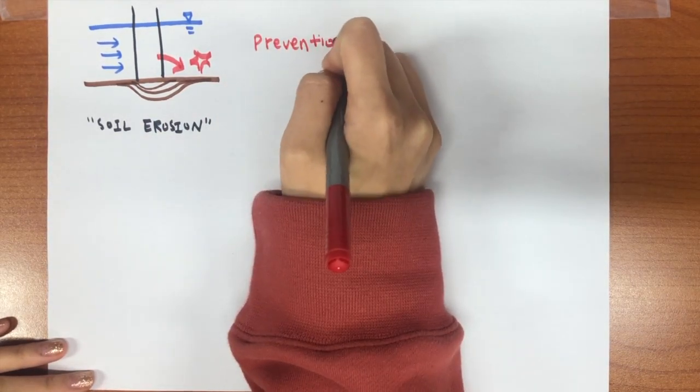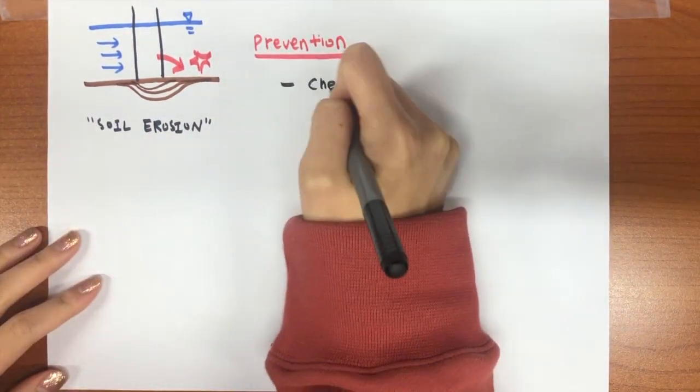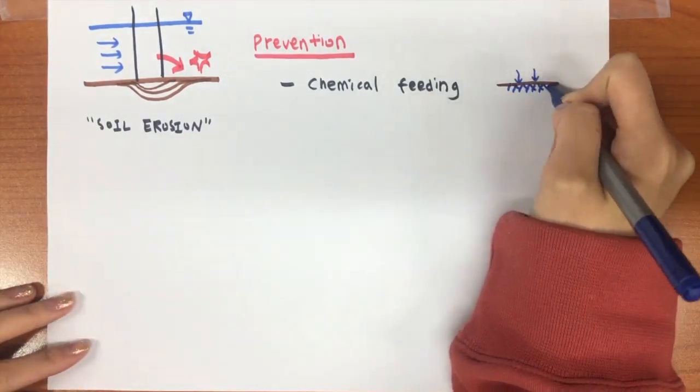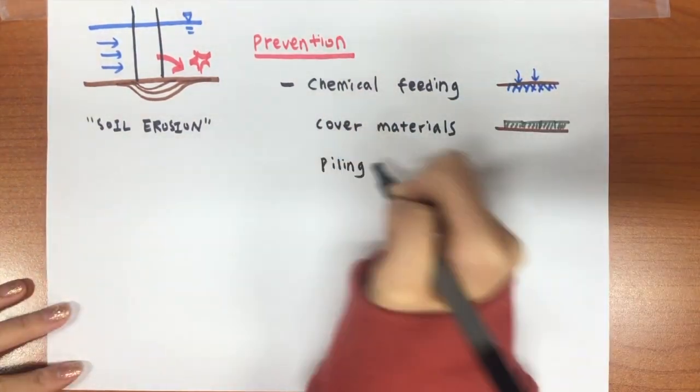Accordingly, several techniques have been used to increase soil erosion resistance, including chemical feeding method, use of carbon materials, and piling.